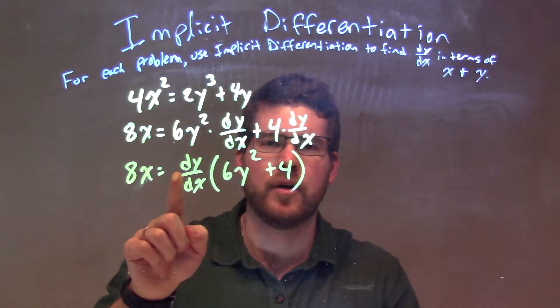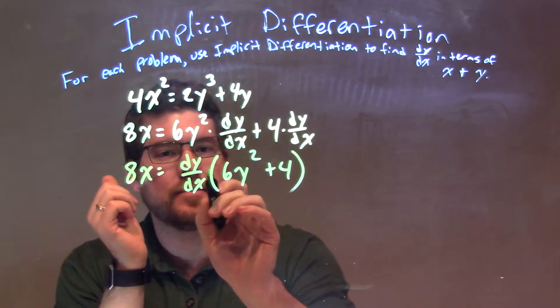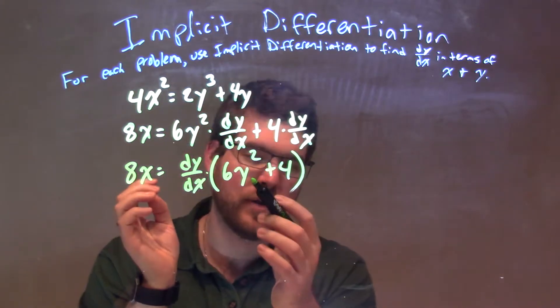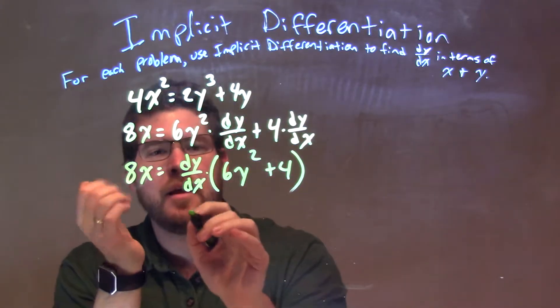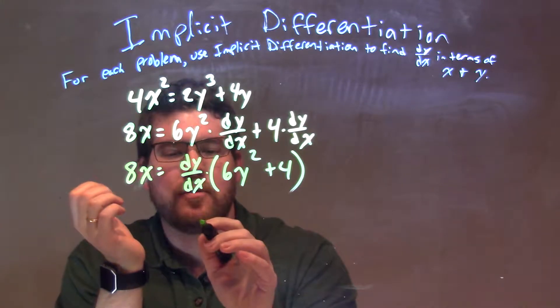Now, I can divide, since it's multiplication there, divide it by 6y squared plus 4 to both sides, and then, we're finally, so we have dy/dx by itself.